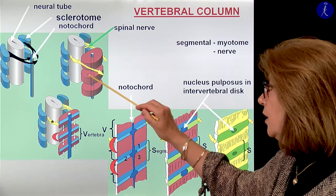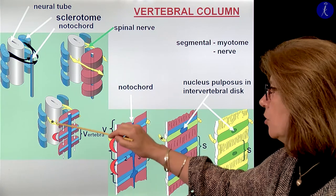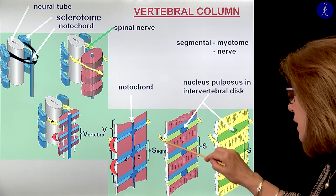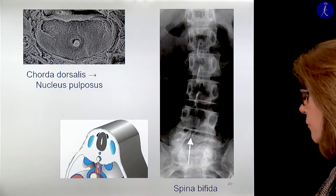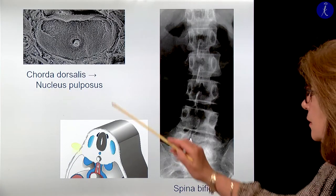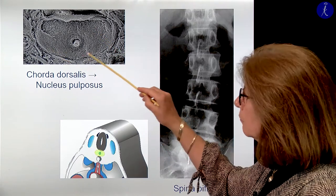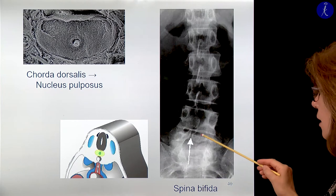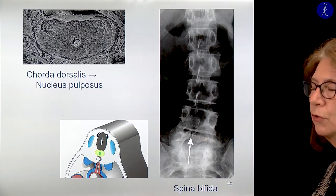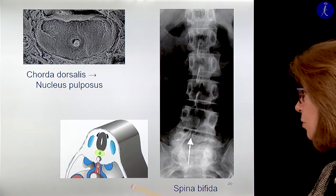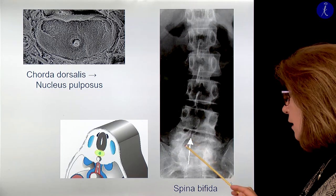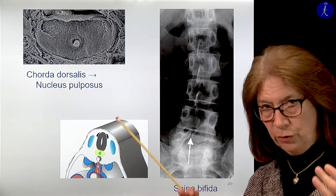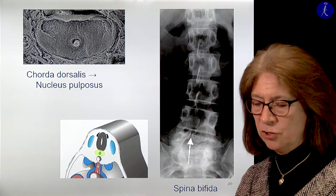Here you see vertebra underdevelopment and the notochord. If the arches of the vertebrae do not unite, you may have the so-called spina bifida. Spina bifida has several stages; this is the milder stage when only the bone arch doesn't fuse.